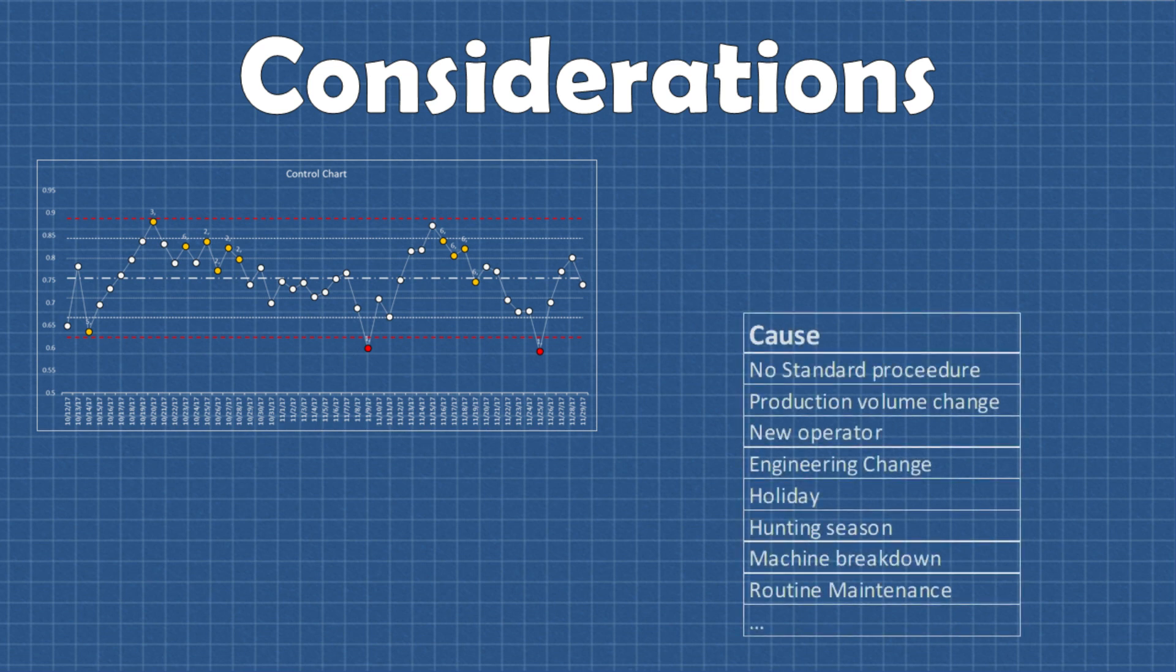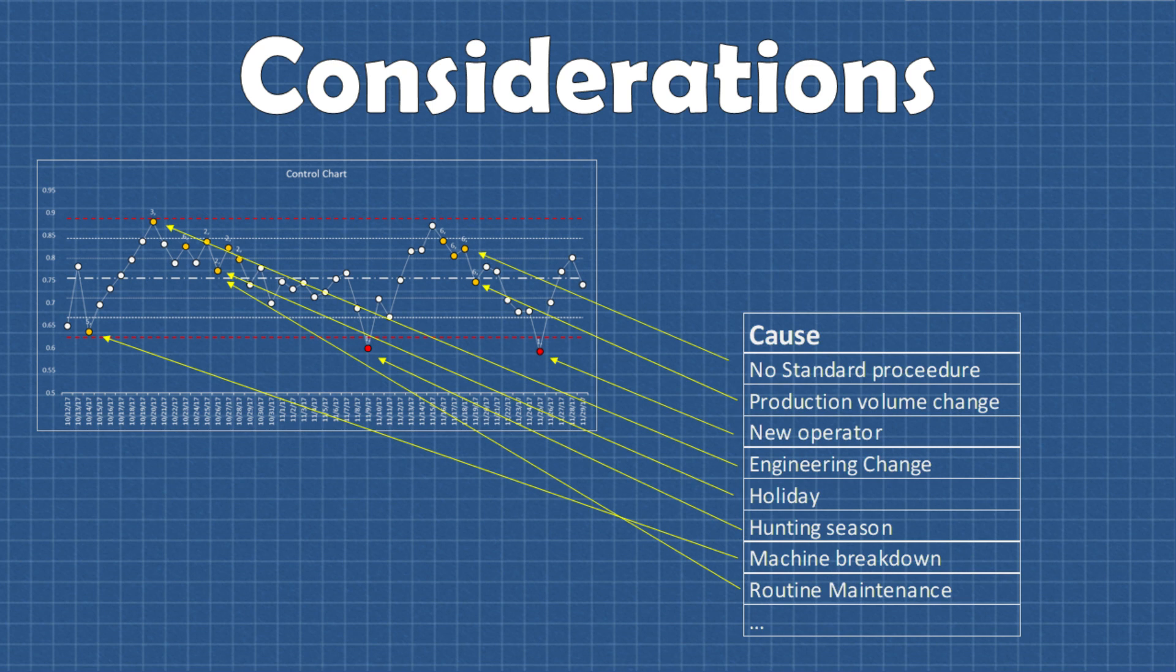The more rules you employ the more signals you will detect. If you want to act upon those signals it's going to require resources so you need to decide what is economical and manageable.